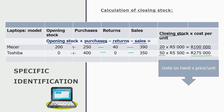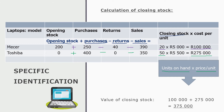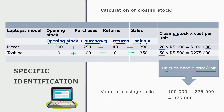To calculate the value of closing stock: take units on hand — calculated as opening stock plus purchases minus returns minus sales — and multiply that by the price per unit. That gives the value of closing stock. In this case, Mesa laptops were worth R100,000 and Toshiba was R275,000. Adding those together, the total value of closing stock is R375,000.